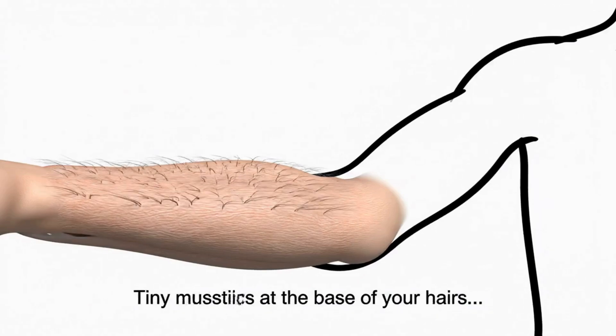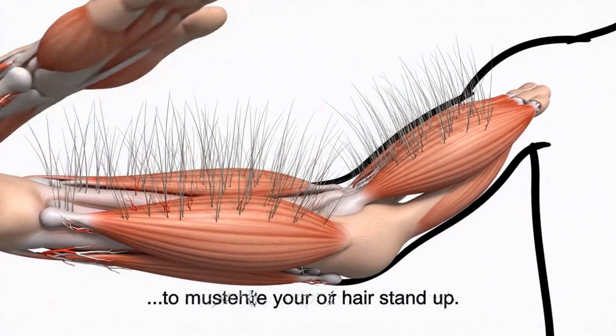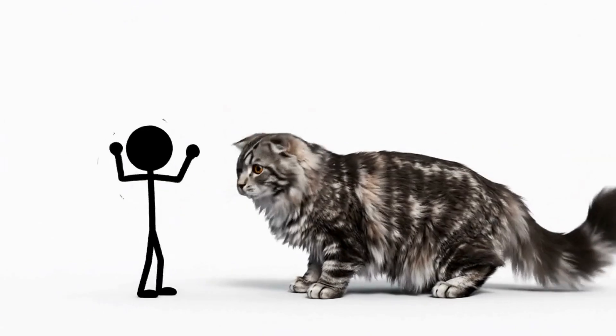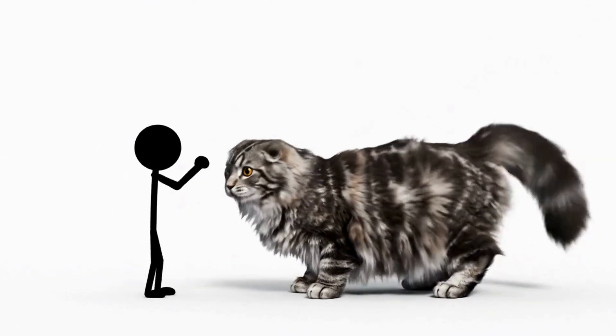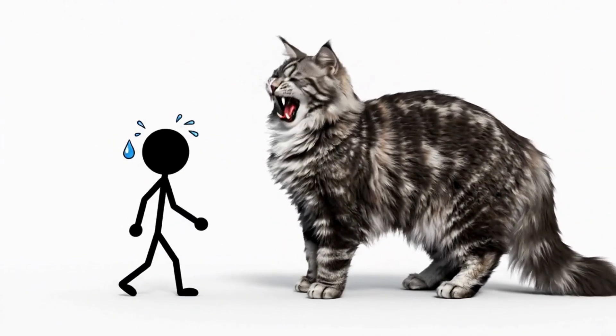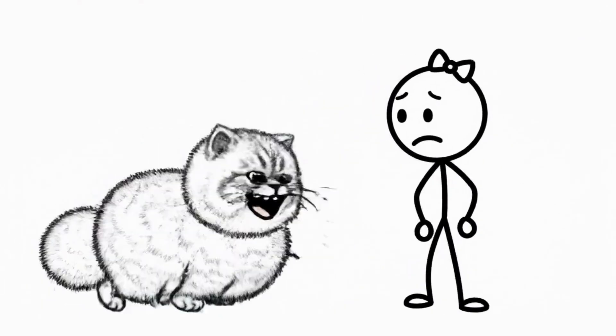Tiny muscles at the base of your hairs pull tight to make your hair stand up. In animals with fur, this creates a warm layer of air, or makes them look bigger. But since you are basically a naked ape, you just look like a plucked raw chicken.